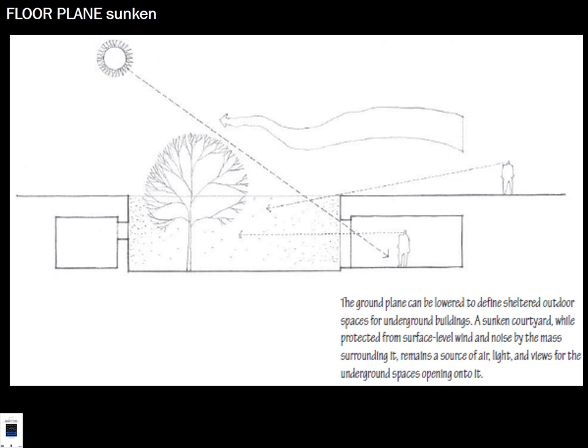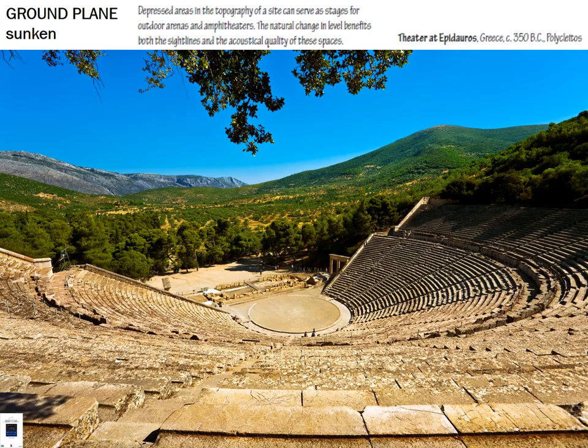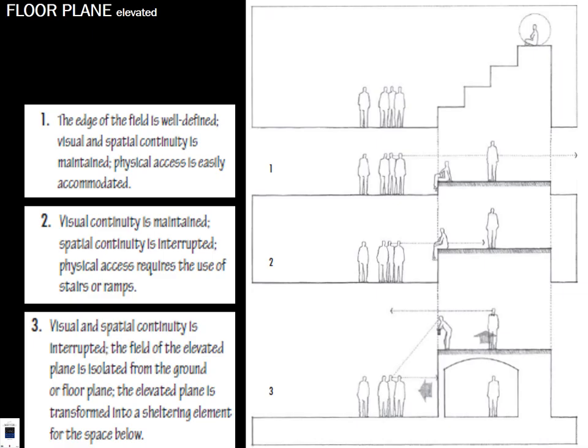If the expanse is wide enough, sunlight gets in. An amphitheater in Greece is a sunken ground plane example from 2,400 years ago. Elevating the plane creates different effects: when a person sits up high, the edge of the field is well defined and visual-spatial continuity is maintained. Physical access must be considered — steps that are too steep cause vertigo and problems with scale and proportion. Maintaining visual continuity makes a difference in perception of the space.